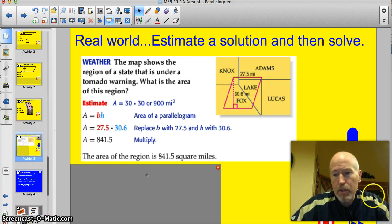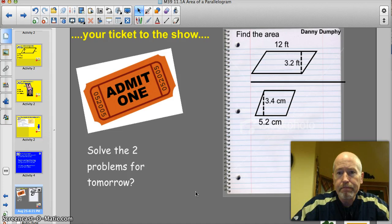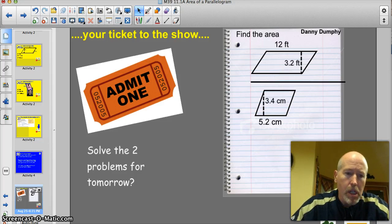All right. Let's get to the ticket to the show. Find the area of these two parallelograms. And I'll pause for a second just so you can freeze the screen. Okay. Have those ready. That will be your ticket to the show for tomorrow.